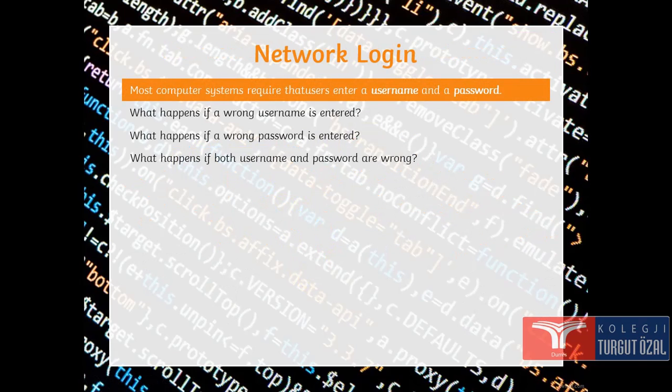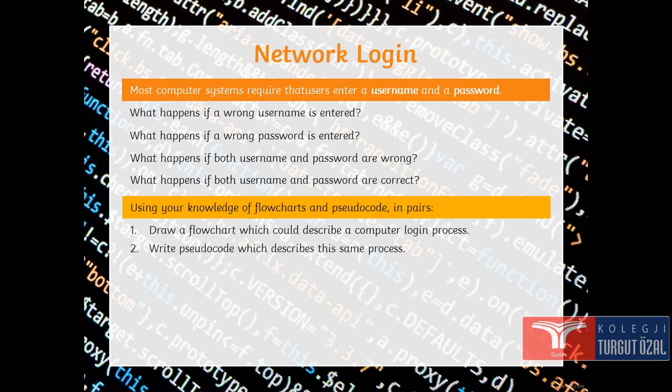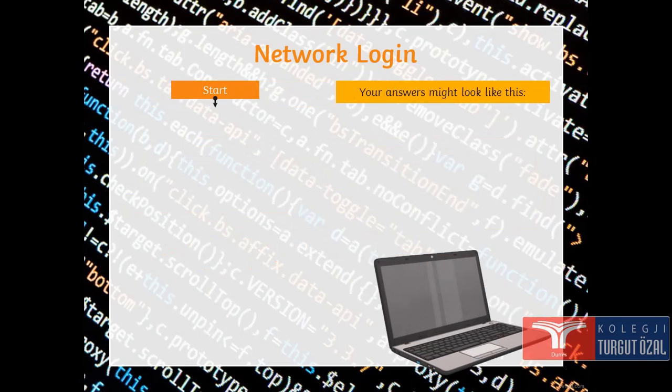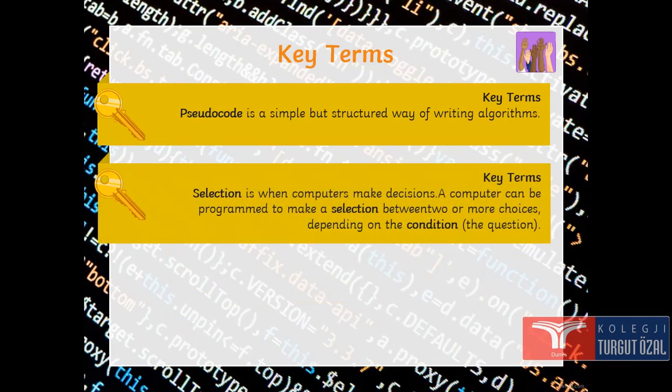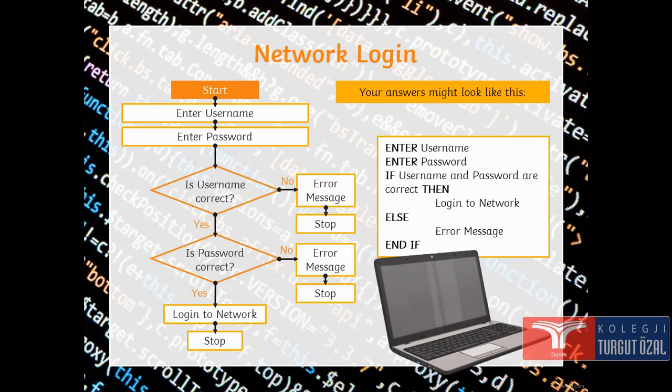Okay. Most computer systems require that users enter a username and password. What happens if a wrong username is entered? What happens if a wrong password is entered? What happens if both username and password are wrong? What happens if user name and password are correct? You will draw a flowchart which could describe a computer login process. Write pseudocode which describes the same process. Here you will need help. I will leave it to you to do this. See it now but think about this and do it on your own way.